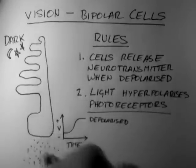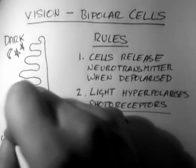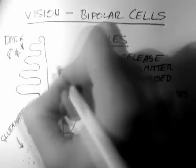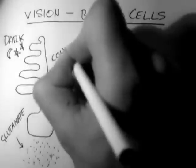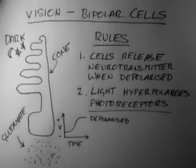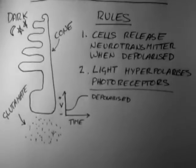This neurotransmitter is glutamate. Now let's look at what happens to this glutamate.